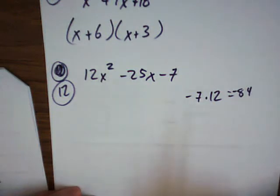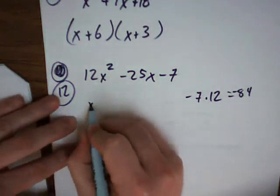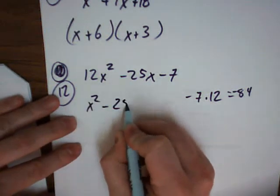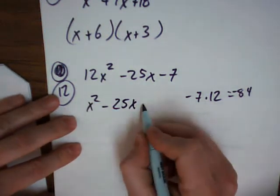7 times 12 is negative 84, if I'm not mistaken. Okay. So I say x squared minus 25x minus 84.